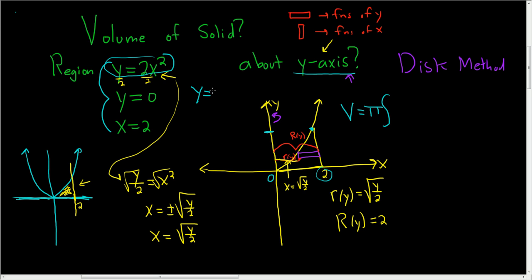we get y equals 2 times 2 squared. So 2 times 4 is 8. So that is 8. So we're going from 0 to 8.